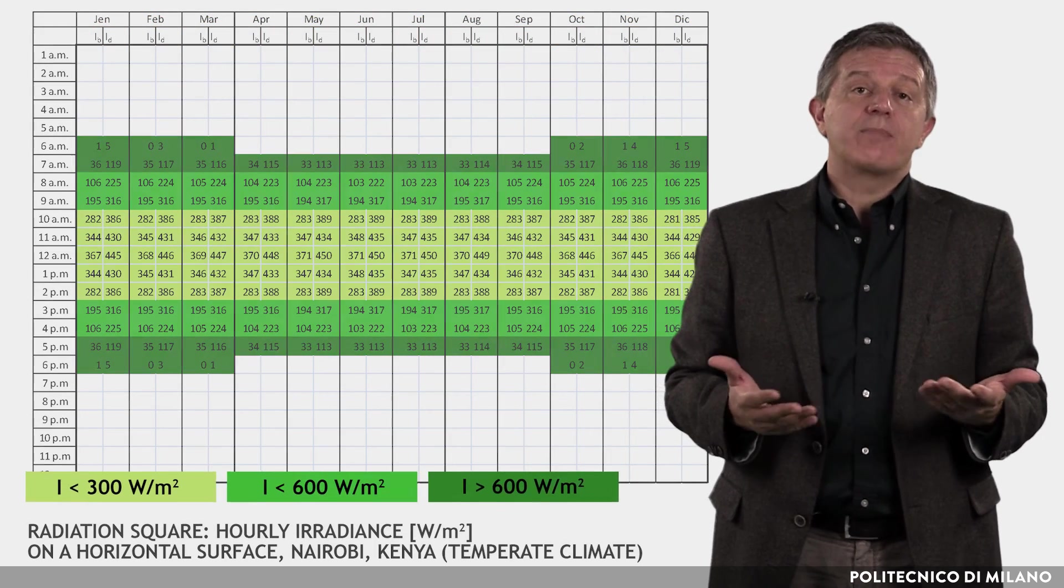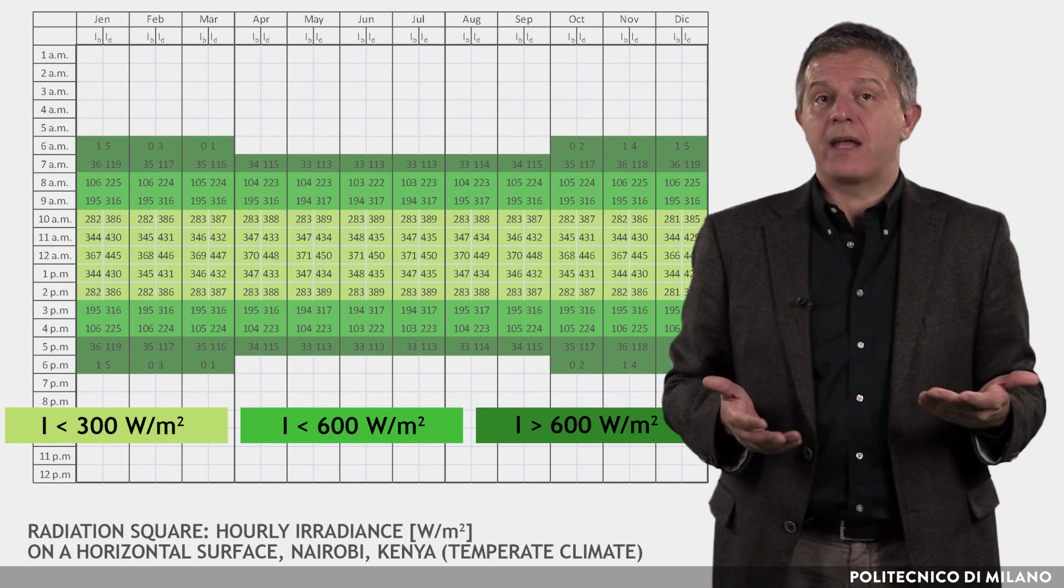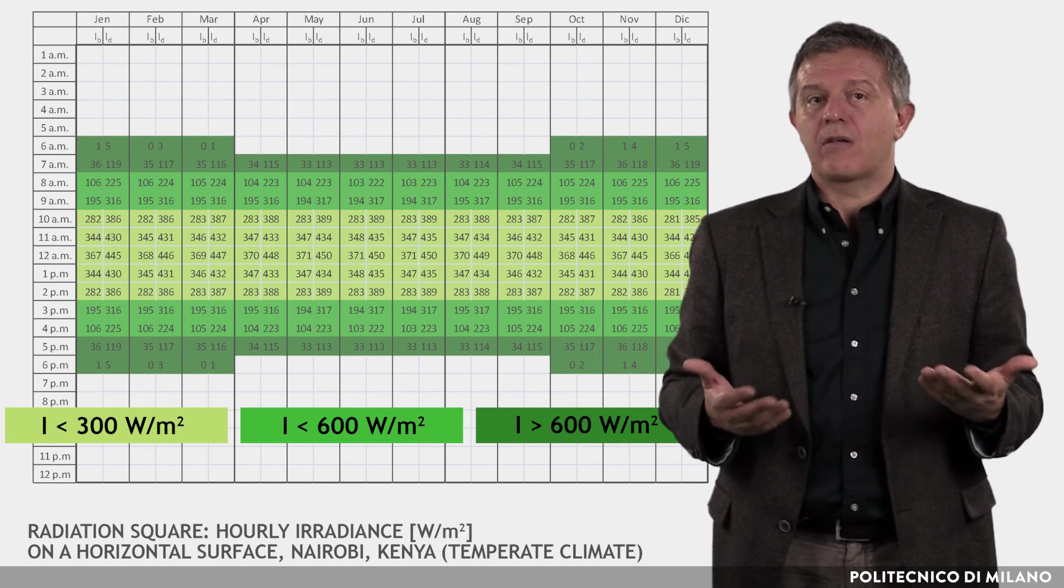In order to better display the magnitude of solar radiation, the cells in the chart have different backgrounds depending on the value of the total irradiance.